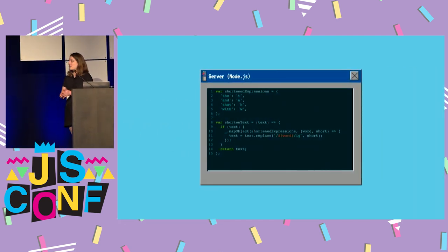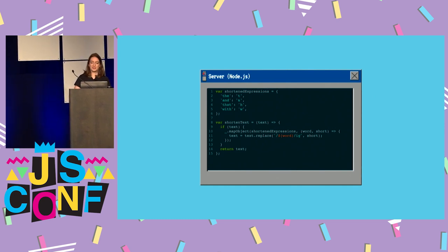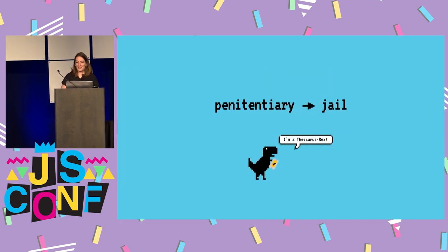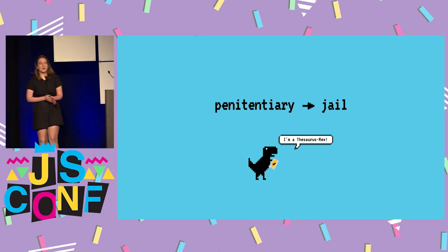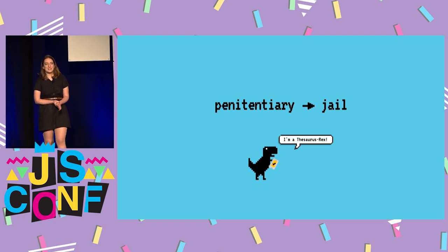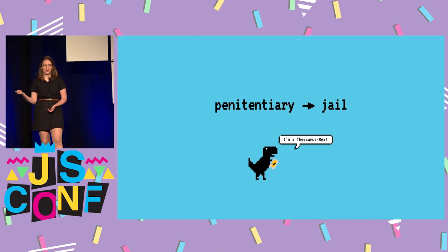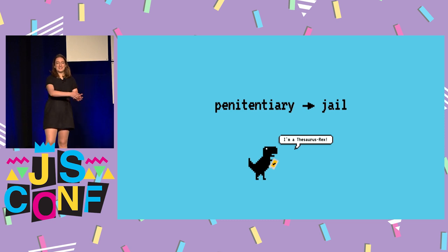We can compress a lot of words this way. All we have to do is set up a mapping of long word to short word and do a replace-all. If you're visiting a website like Wikipedia, there are probably big words that don't need to be that big. For example, 'penitentiary' is a 12-letter word that in most contexts means the same thing as 'jail' — a 4-letter word. So we can use a Thesaurus API to find long words, find short synonyms, and replace them. This is not a reversible compression.